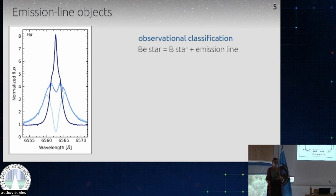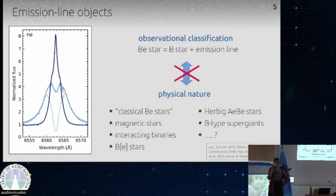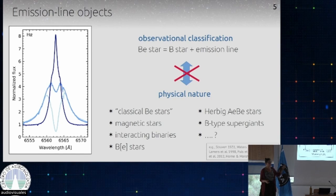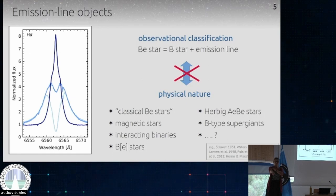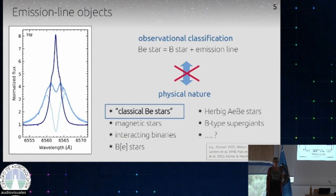What that physically means is a different question. It doesn't mean that all stars showing a B-type spectrum and emission are the same thing physically. There are a lot of things — magnetic stars could be B-type stars that show emission because of a strong magnetic field, or B-type supergiants have strong winds and therefore emission lines too. The ones I want to focus on are what we call classical BE stars, and there has been a lot of research into what they actually are.